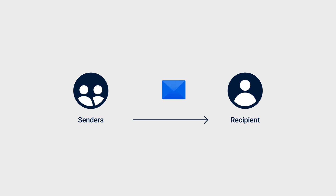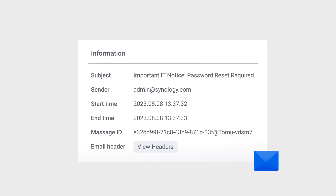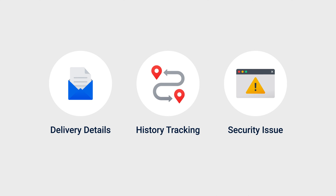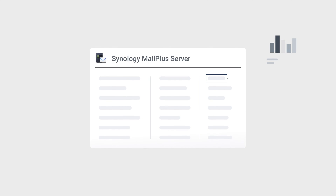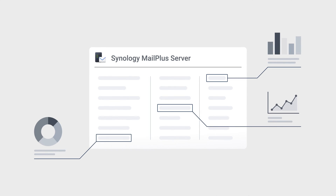When emails go missing or get blocked during the delivery process, you can use the transaction log to quickly pinpoint the cause of the issue. This feature records detailed information about each email, including delivery details, history tracking, and security issues. You can also export these logs for in-depth analysis of any anomalies.